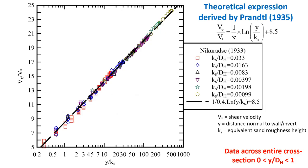A reanalysis of the data of Nikuradse is shown here for a wide range of relative roughness and compared with a theoretical expression derived by Prandtl in 1935.